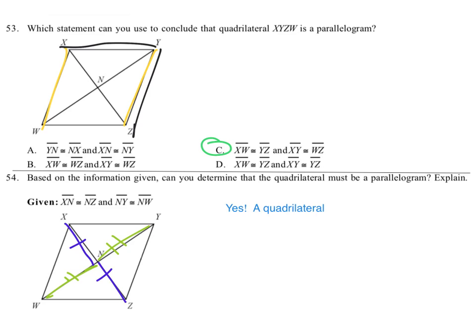A quadrilateral is a parallelogram if and only if the diagonals bisect each other. And that's what they do.